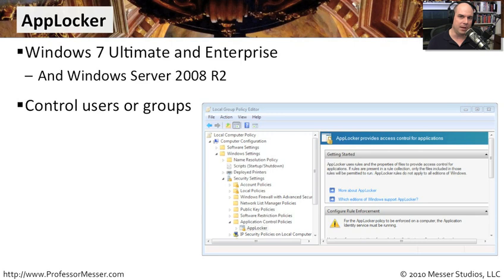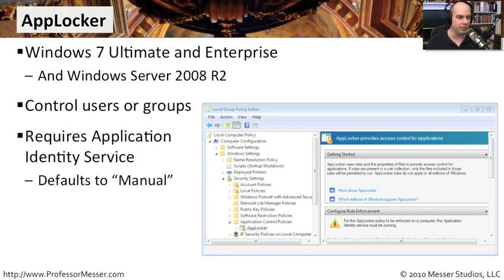One nice thing about AppLocker that you could not do with the software restriction policies is control this by user or by group. You could set up a policy that might allow the marketing department to run a program, but not allow shipping and receiving to run a program. And it's all integrated into the users and groups for your Active Directory infrastructure.